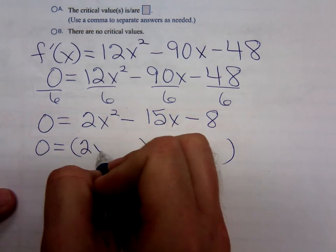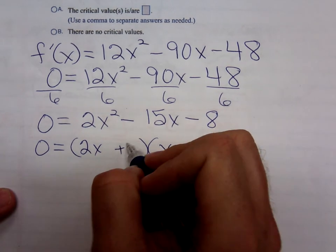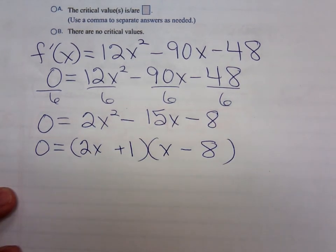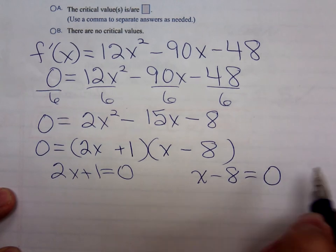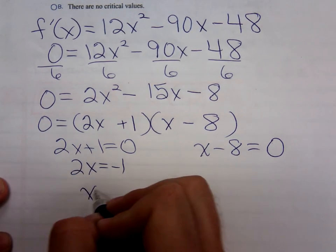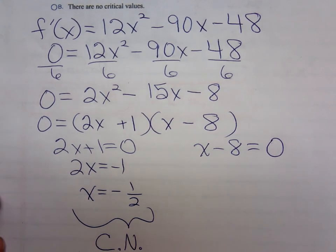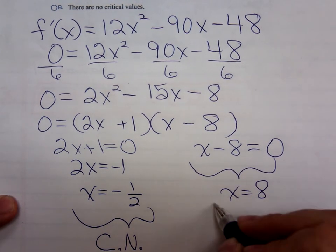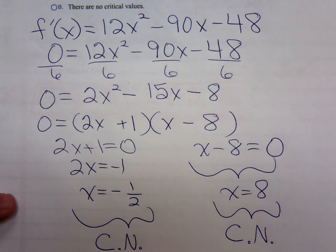2x squared, I'll use a 2x and an x. 8, I'm going to resist that 4 times 2, and I'm going to use an 8 times 1. I think a negative 8 and a positive 1. Does that do it? Yes. Set each factor equal to 0 to give us x equals negative 1 half. That's my first critical number. What's the other critical number? Positive 8 for my second critical number.